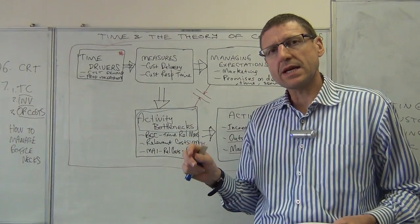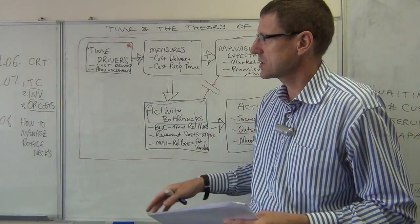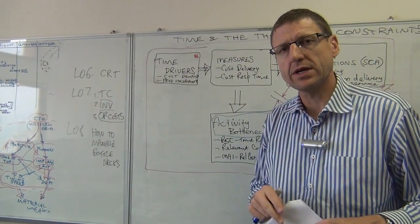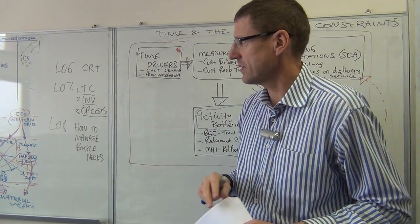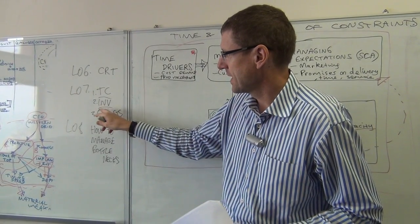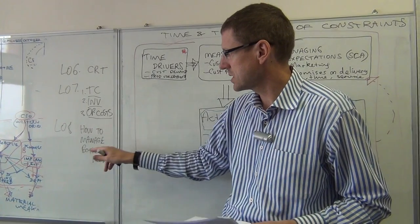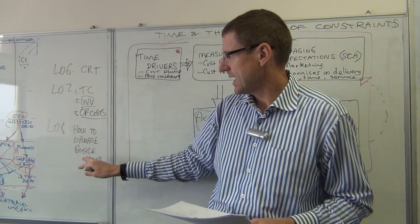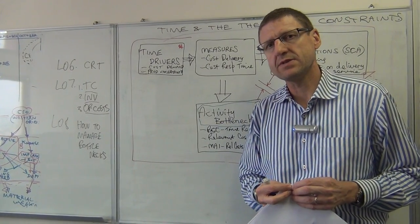The second half of this chapter looks at customer response time as learning objective number six. Learning objective number seven is the theory of constraints where we look at the investments, opportunity costs, and the total costs. Learning objective eight, how to manage bottlenecks. So we're going to look at some of these objectives in today's lecture.